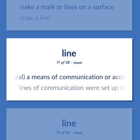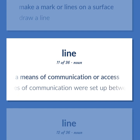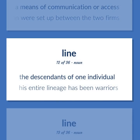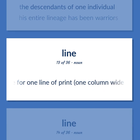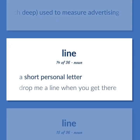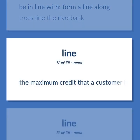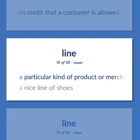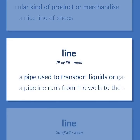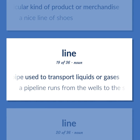LINE: Often plural, a means of communication or access. 'Lines of communication were set up between the two firms.' The descendants of one individual — 'His entire lineage has been warriors.' Space for one line of print, one column wide and one fourteenth inch deep, used to measure advertising. A short personal letter — 'Drop me a line when you get there.' A telephone connection. Be in line with; form a line along — 'Trees line the riverbank.' The maximum credit that a customer is allowed. A particular kind of product or merchandise — 'A nice line of shoes.' A pipe used to transport liquids or gases. 'A pipeline runs from the wells to the seaport.' A commercial organization serving as a common carrier. Acting in conformity — in line with.